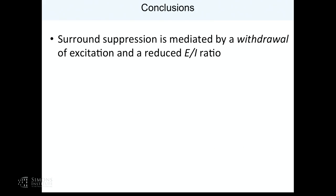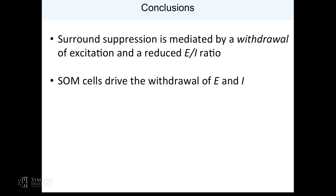To conclude this first part: surround suppression is a canonical computation mediated by withdrawal of both excitation and inhibition and a reduced E/I ratio — that's maybe the key finding, which was probably in Ozeki's data but wasn't pointed out. Also shown recently by Jeff Isaacson in the auditory system.